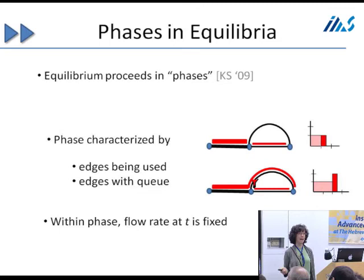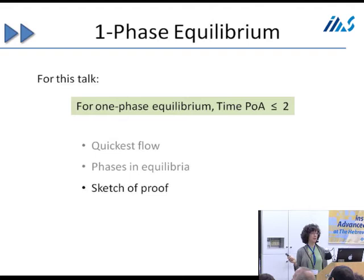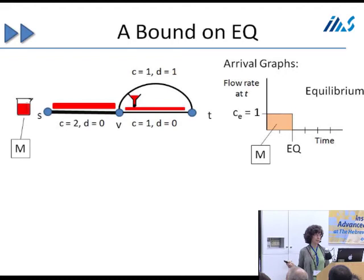Within a phase, the flow rate is fixed — determined completely by the paths being used. Over time, either edges are added to the graph or queues drain, reducing the number of queues while new queues may start. I'll make an assumption about the number of phases: I'll discuss a one-phase equilibrium, and show that the time price of anarchy is at most 2 — a little worse than our main theorem.